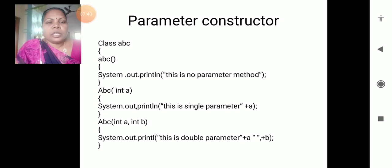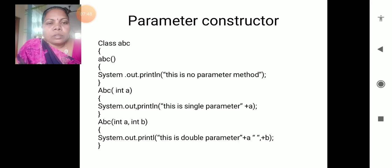The printf statement - there is no parameter passing. Then followed by the next abc - replacing with small a - abc, int a: that is single parameter passing. abc, int a comma int b: that is double parameter passing. So we are passing the parameters.